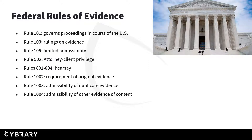So the federal rules of evidence — this is not an all-inclusive list. These are some of the most common ones you're probably going to see on the exam itself. You'll want to study all the federal rules of evidence to make sure you're familiar with them. Some of the key ones I think you should memorize are rule 103 — rulings on evidence — as well as rule 105 — limited admissibility — and rule 502, attorney-client privilege.